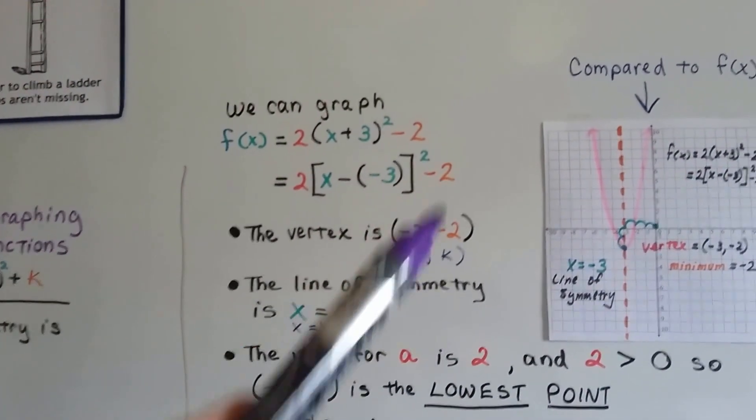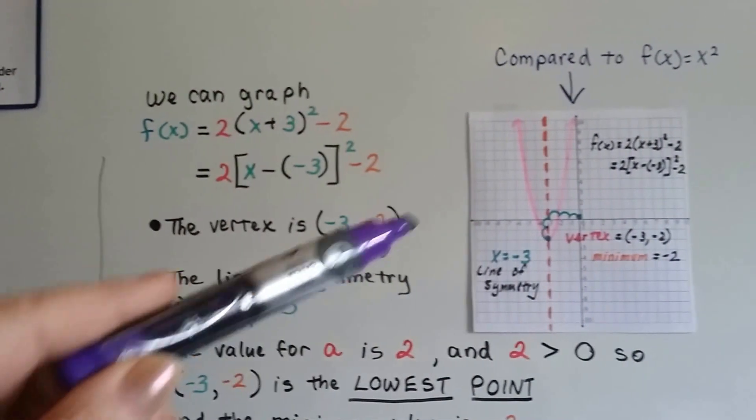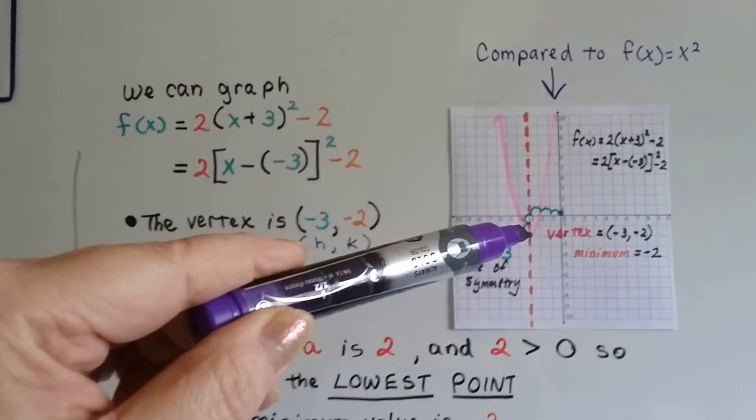So, our vertex is (-3, -2). That's our (h, k). Negative three, negative two, right here.